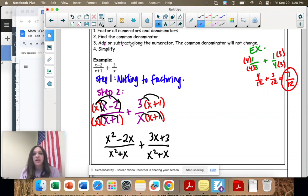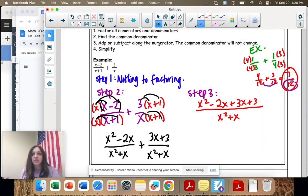Step 3 is add or subtract along the numerator only. The denominator doesn't change, just like our 12ths don't change. We're only adding on the top. I have x²-2x+3x+3. My denominator is the same on both fractions, so we're just going to write it once.